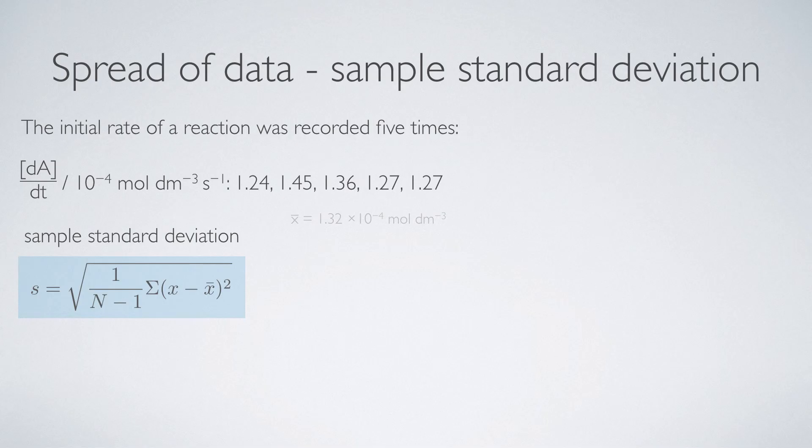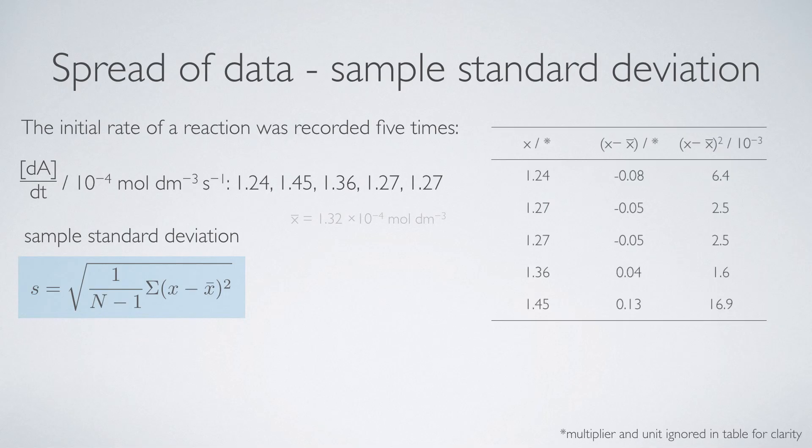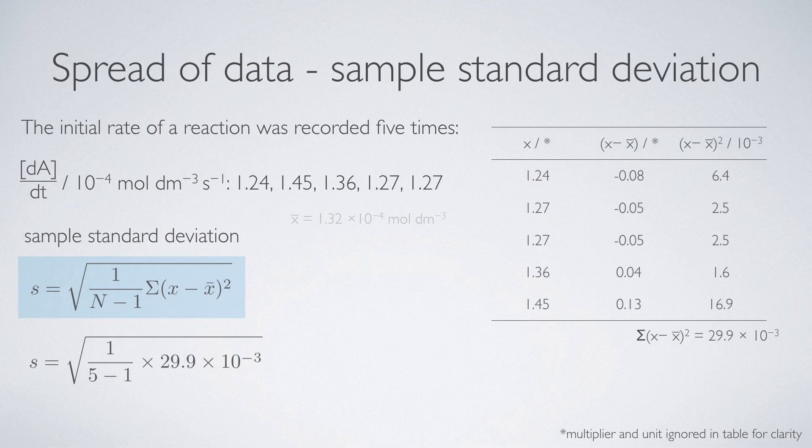If I then calculate my sample standard deviation for each of these values within my data set, then I go some way towards being able to calculate the sample standard deviation. For clarity, I've missed out the multiplier and the units on the table, but they shouldn't be forgotten at the end of the calculation. Taking each value in turn and taking away the mean and squaring this value gives me the values in the table, which if I sum gives me this value of 29.9 times 10 to the minus three. Simply dropping this into the equation that I have the sample standard deviation, remembering that I want n minus one because I'm not 100% sure of the value of my mean, lets me calculate the value of the sample standard deviation to be 0.09.